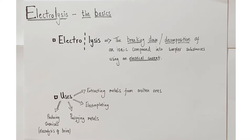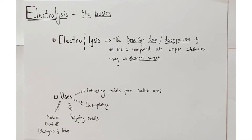Electrolysis is a combination of two terms: 'electro' and 'lysis.' Electro should conjure up the idea of applying an electrical current, whilst lysis is a scientific term meaning breaking down or decomposition. Combined, electrolysis is the breaking down or decomposition of usually an ionic compound into its simpler components using an electrical current.